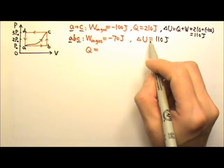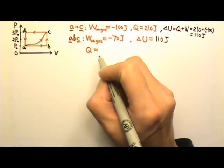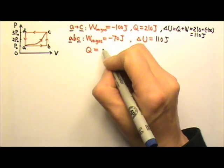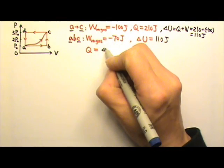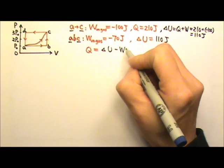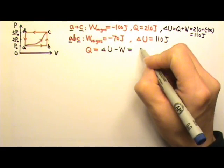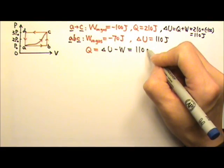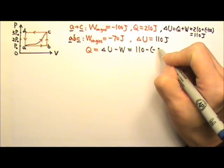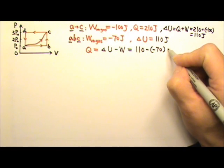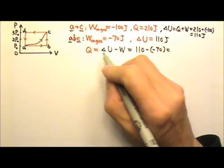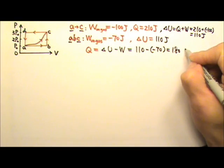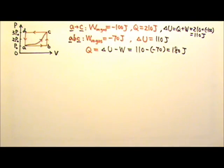Now we have enough information to find Q, because Q is delta U minus W. So it's 110 minus negative 70. The heat added to the gas for path ABC would be 180 joules.